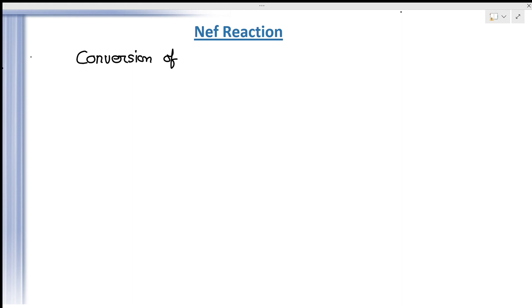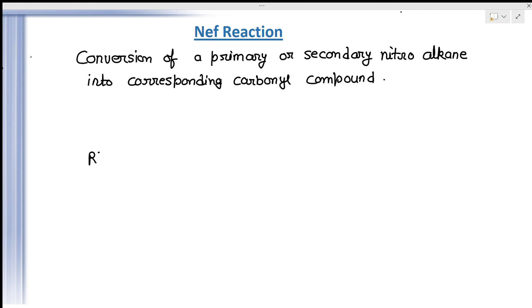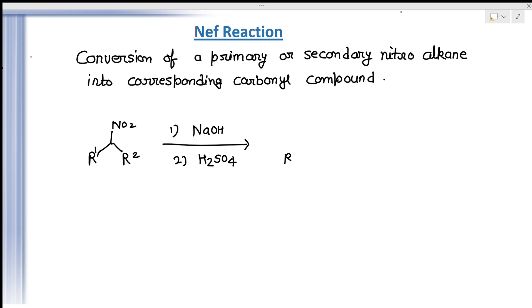The Nef reaction is the conversion of a primary or secondary nitroalkane into the corresponding carbonyl compound. The substrate has R1 and R2 groups connected to a carbon bearing an NO2 group. It is firstly treated with NaOH (a base), and then treated with H2SO4. The nitroalkane is converted to the carbonyl compound, and we obtain half N2O plus half H2O as byproducts.